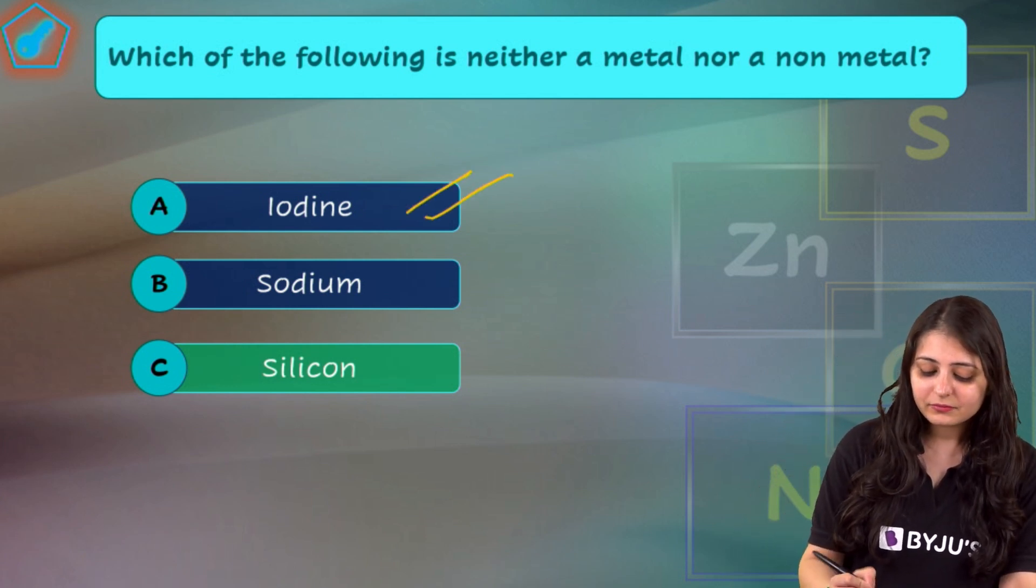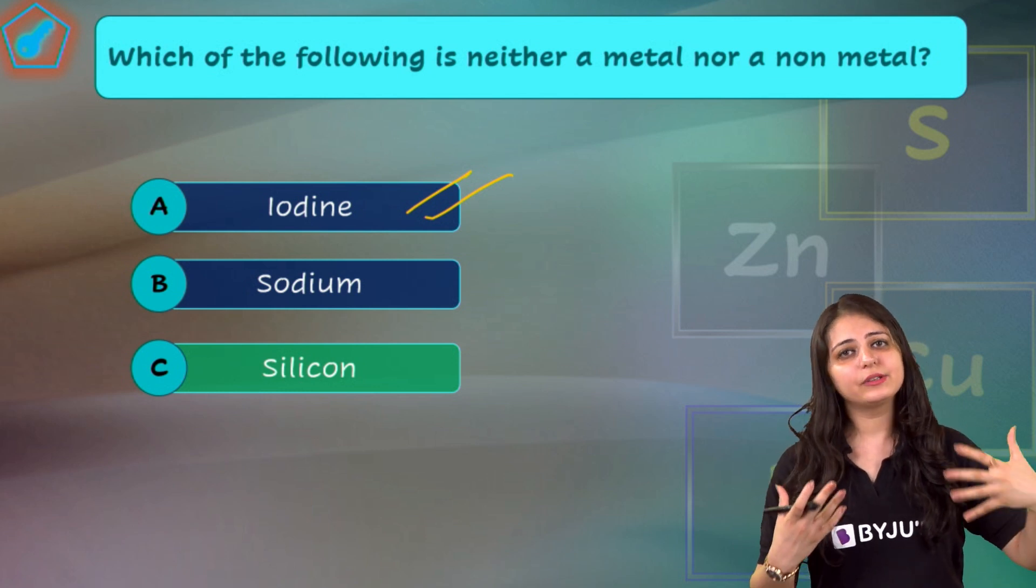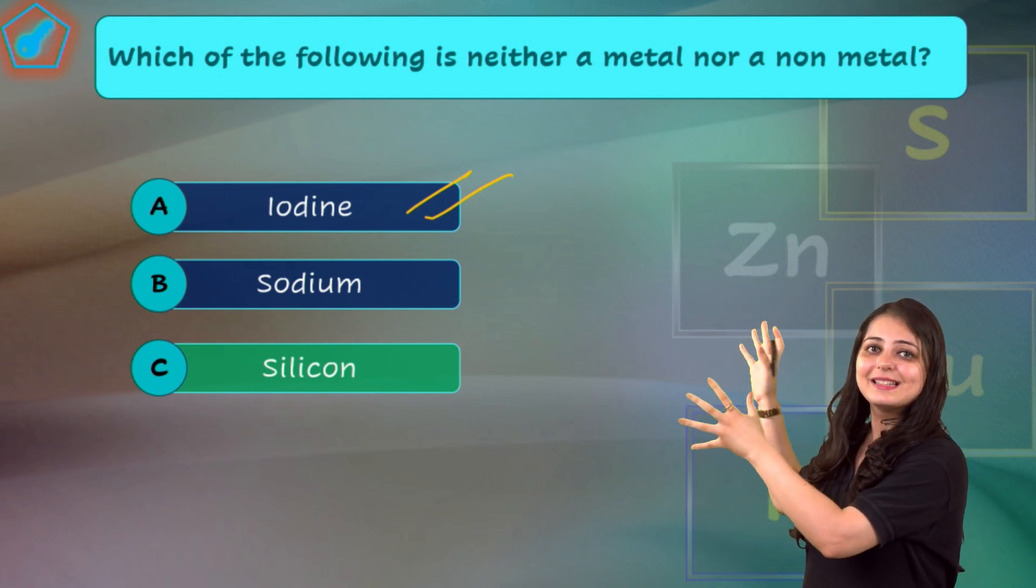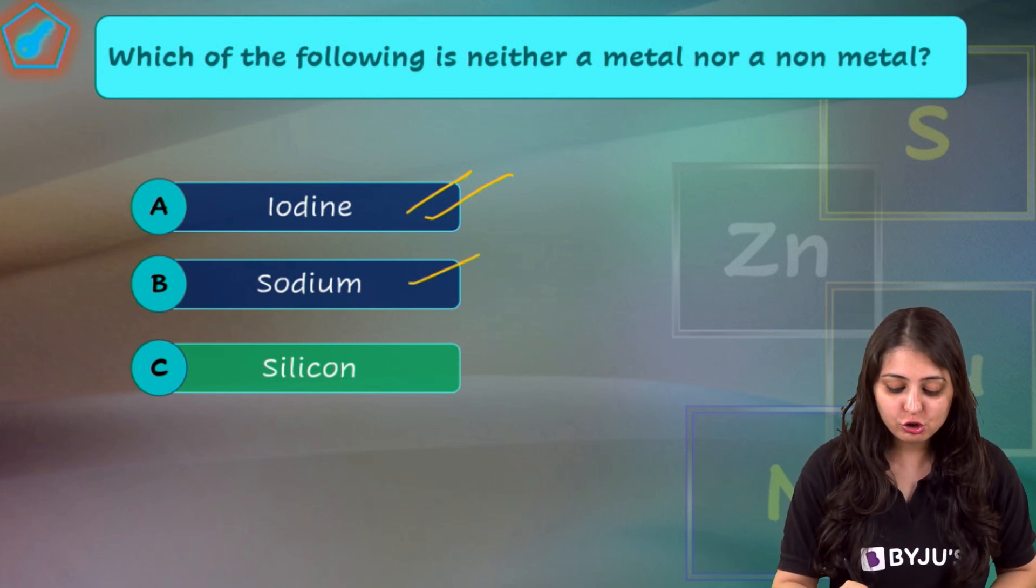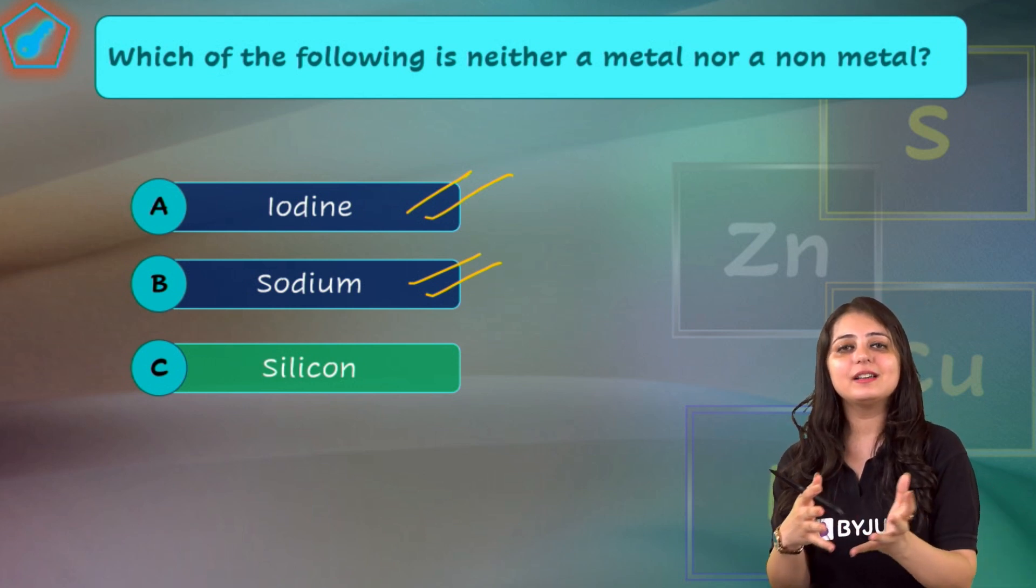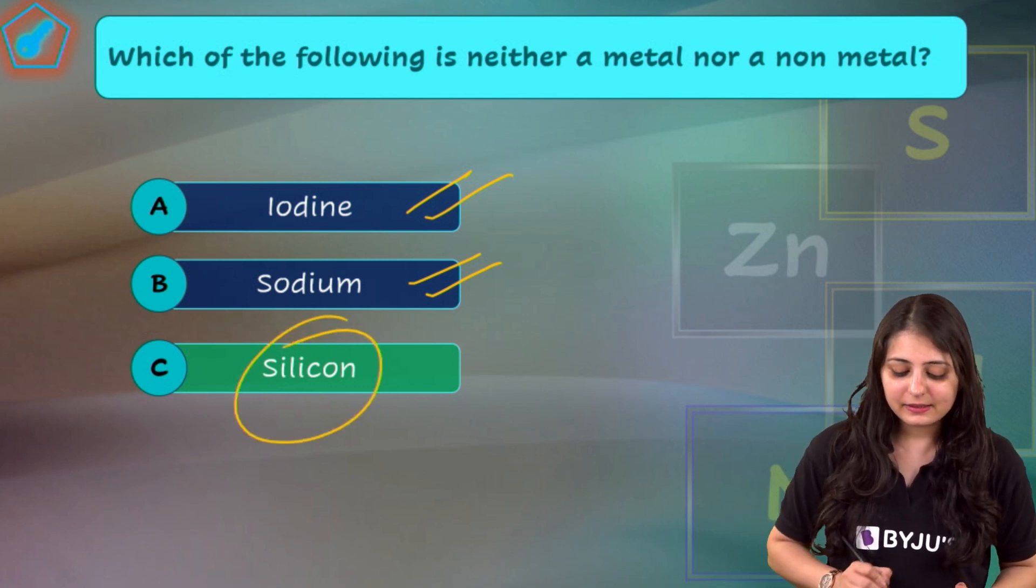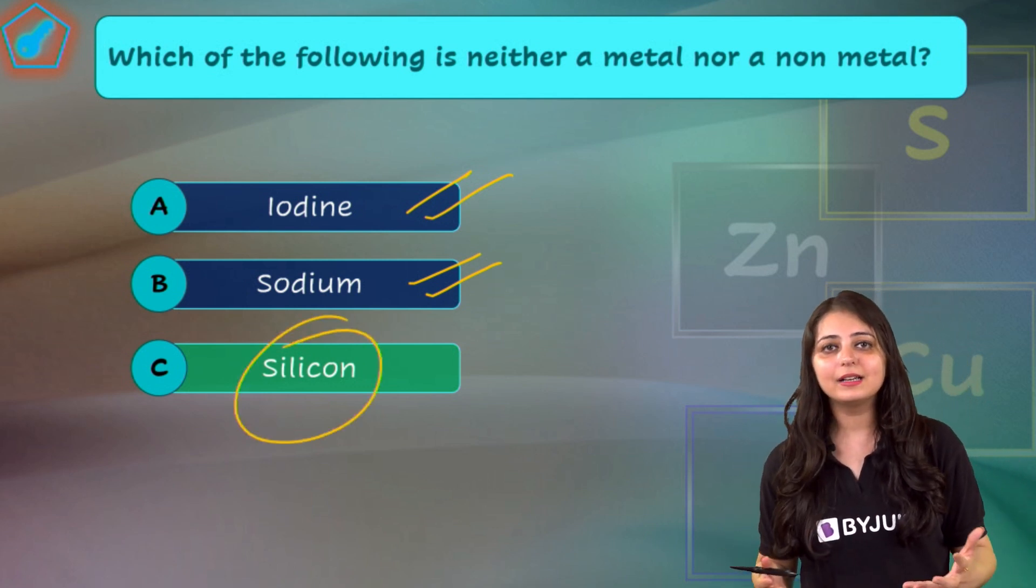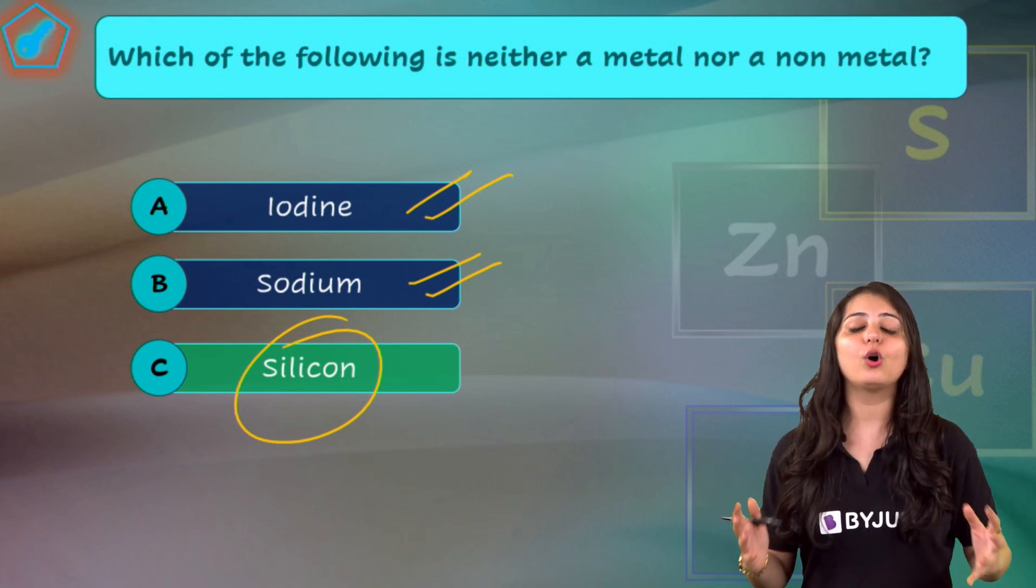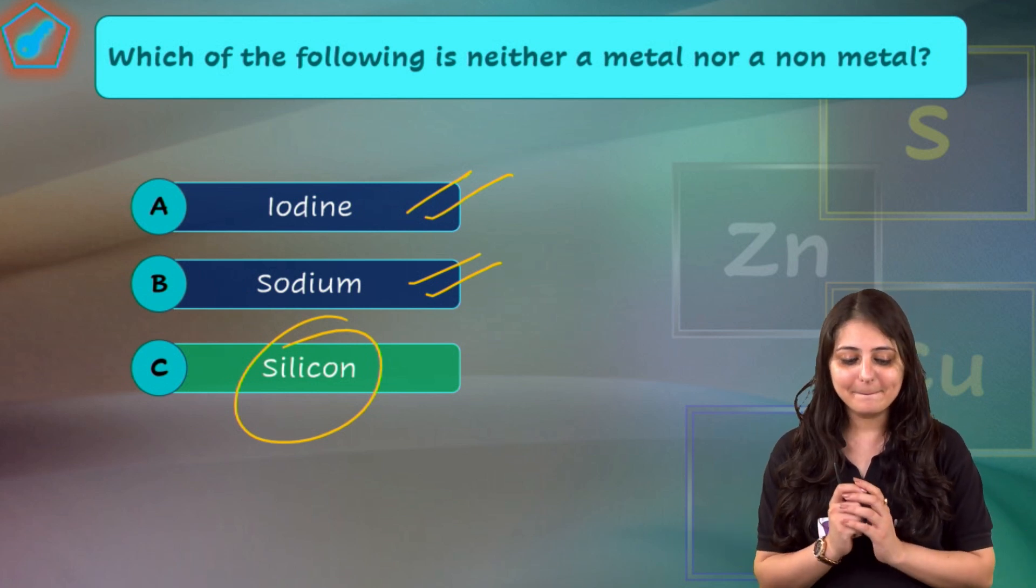See, iodine, it's a non-metal. We learned it today in exceptions - that while non-metals have a dull surface, iodine is an exceptional non-metal that is lustrous. Sodium is a metal. Again, we learned this today in exceptions. Metals, they're generally hard, but sodium is a soft metal. That was an exception. Silicon is neither metal nor non-metal. But it shows some properties of metals and some properties of non-metals, and we call such elements as metalloids. So silicon is one of the examples of metalloids.